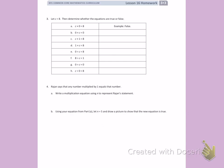Number 3, let C equal 8. Then determine whether the equations are true or false. So in letter A, it says C times 0 equals 8. So in other words, 8 times 0 equals 8. We learned today that anything times 0 equals 0, and that's why the answer is false.